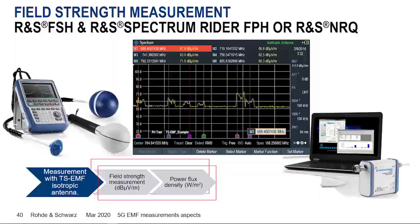Last but not least, we can also offer frequency selective EMF exposure measurement. This is done with our handheld spectrum analyzers — the FSH or FPH — which have a bandwidth up to 20 MHz. Or we will offer the front-end remote radio head, the NRQ, which has a bandwidth of 100 MHz, combined with an isotropic antenna, giving you the full 5G 100 MHz channel bandwidth in FR1 to perform EMF exposure measurements.